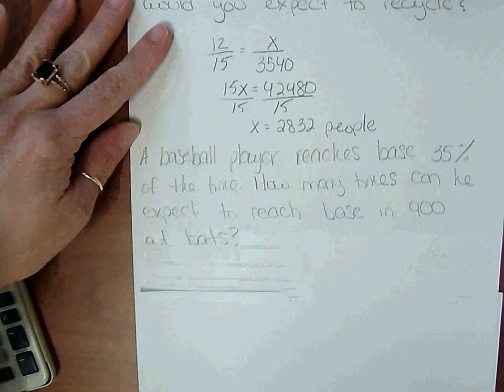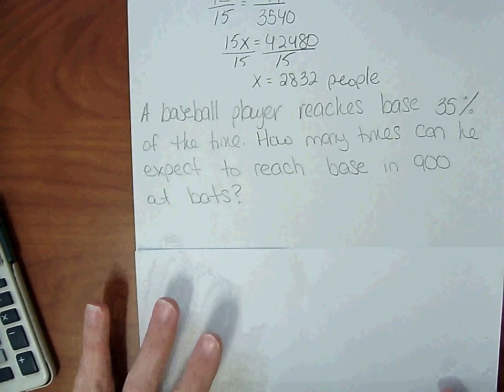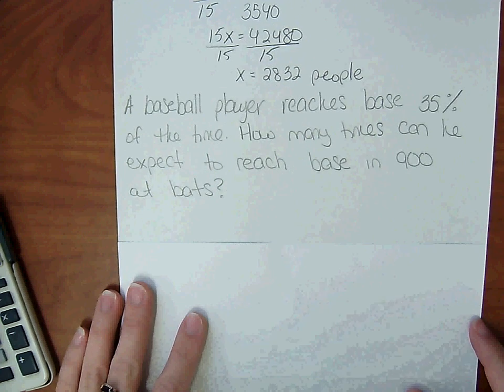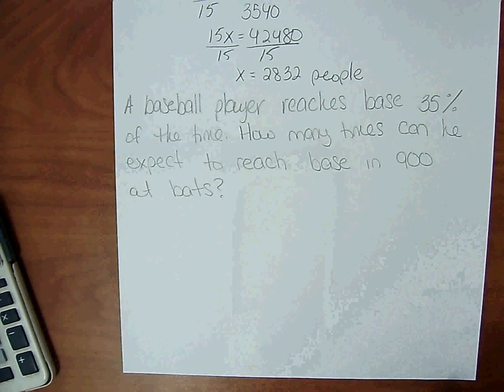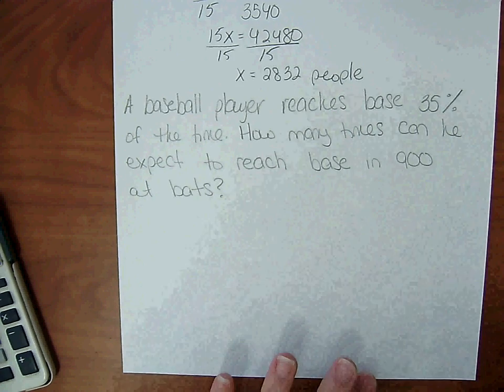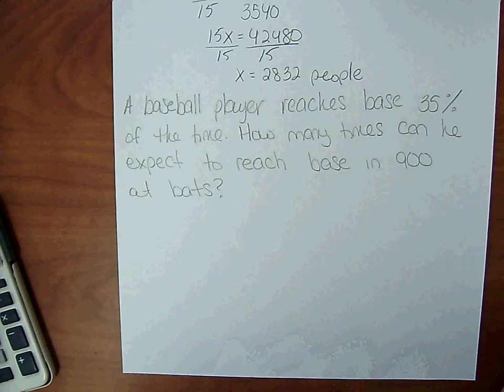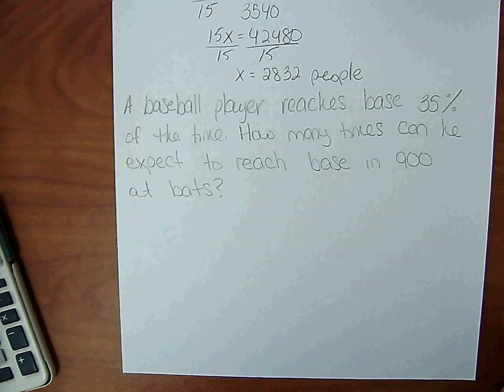A baseball player reaches base 35% of the time. How many times can he expect to reach base in 900 at-bats? This 35% has been based on his experimental probability of making base.